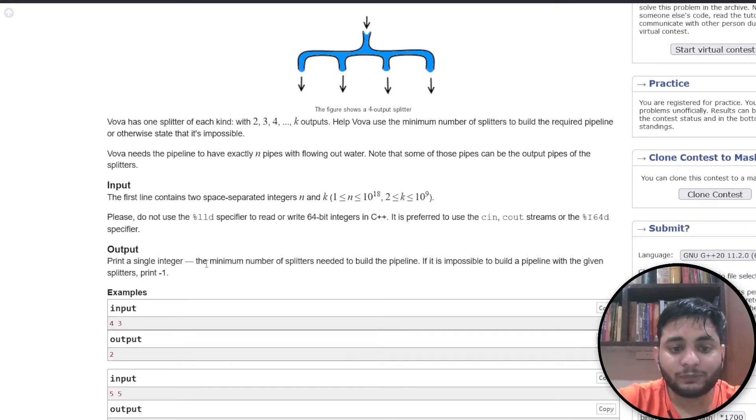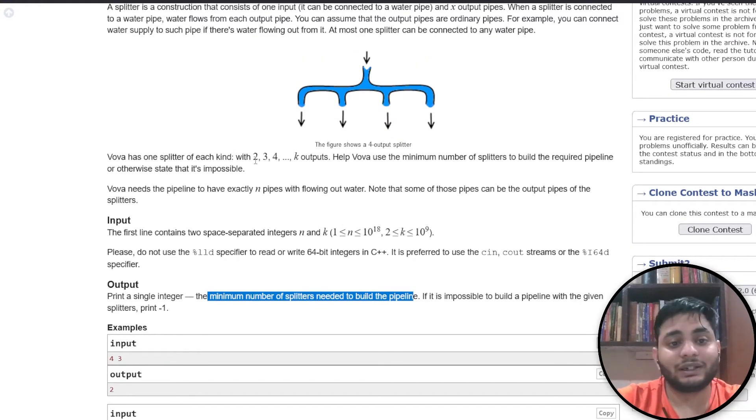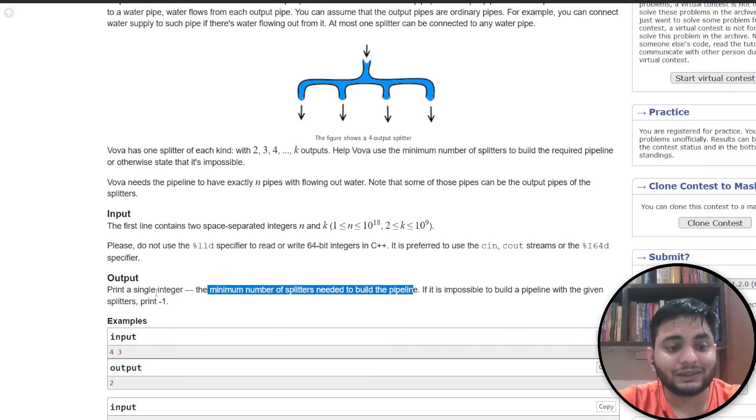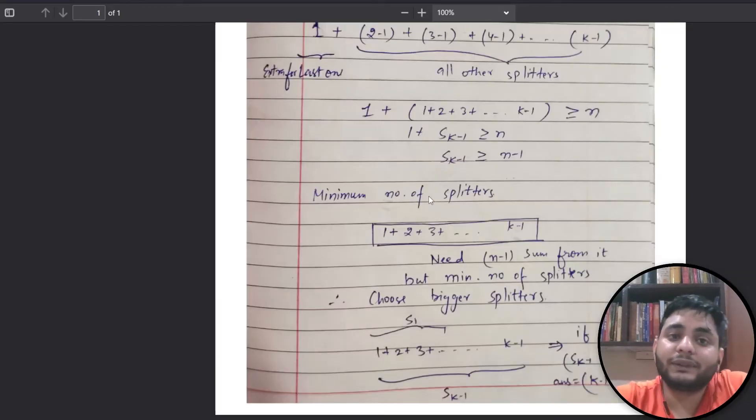The next question is: we need to find the minimum number of splitters needed to build the pipeline. For minimization, I need to use splitters with high number of outputs, so I will end up using splitters from this side with larger k values.